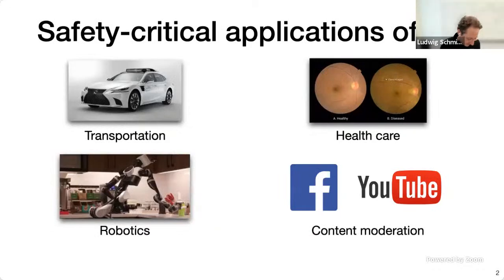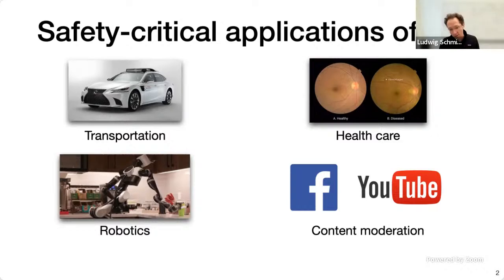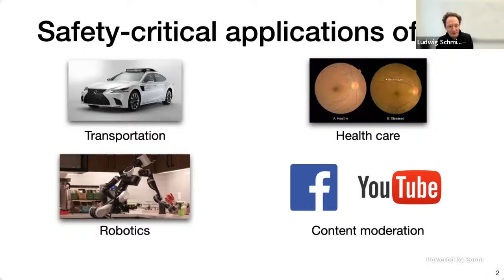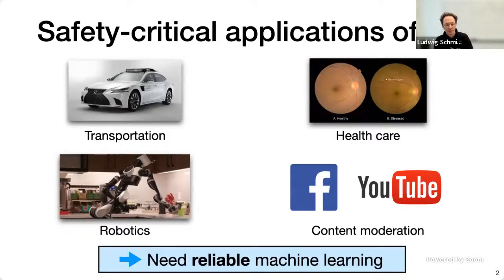I'm going to talk about a data-centric view on reliable generalization. Everyone is on board with the high-level motivation that over the past 10 years we've seen really dramatic progress in machine learning on the research side, with lots of progress on benchmarks. Now the ambition is to take this technology and apply it in a wide range of real-world applications like transportation, self-driving cars, healthcare applications like x-ray imaging, robotics, online content moderation, and in 2023, chatbots.